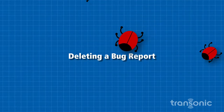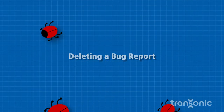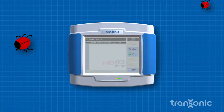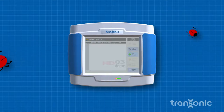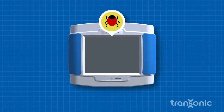Deleting a bug report. If an HDO3 monitor becomes unresponsive, a bug report is generated. Follow these steps to delete a bug report.